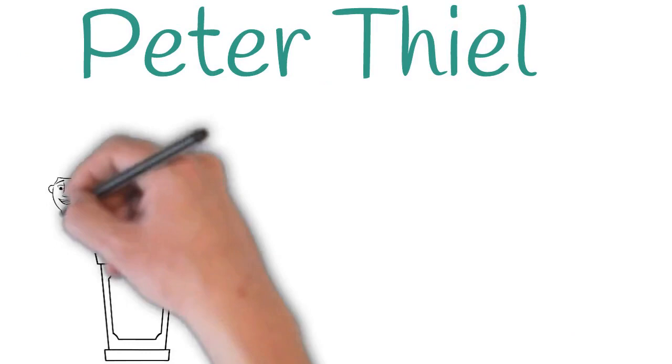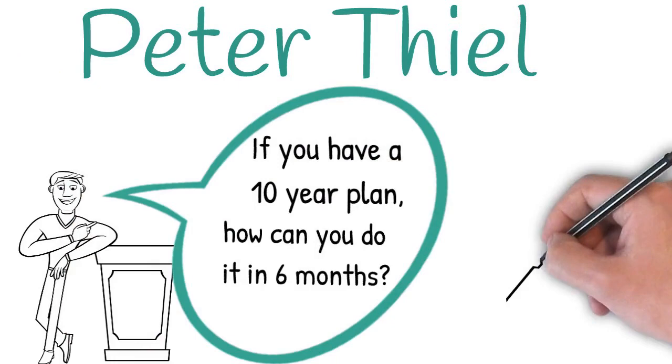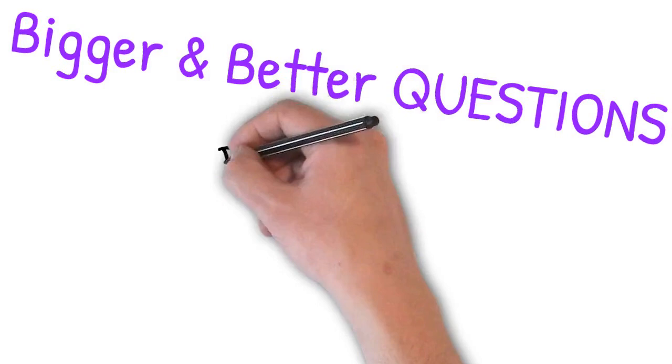For example, look at the billionaire Peter Thiel's question that he asked himself and others. If you have a 10-year plan of how to get somewhere, you should ask, why can't you do this in six months? Bigger and better questions simply demand bigger and better answers.